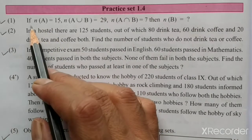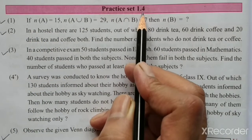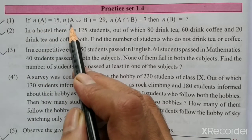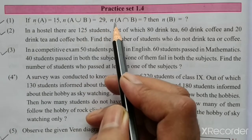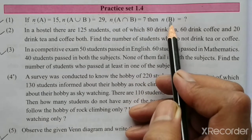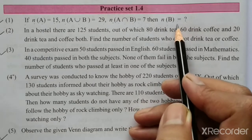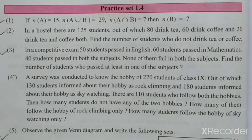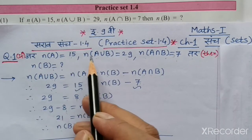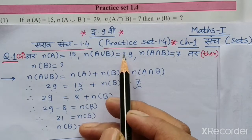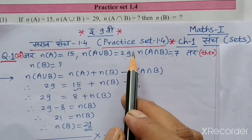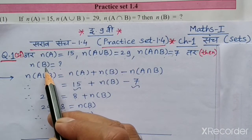Now let us solve question 1 from practice set 1.4. If n(A) is equal to 15, n(A∪B) is equal to 29, n(A∩B) is equal to 7, then n(B) is equal to question mark. We have to find the number of elements in set B.